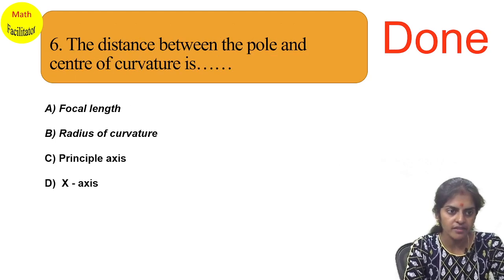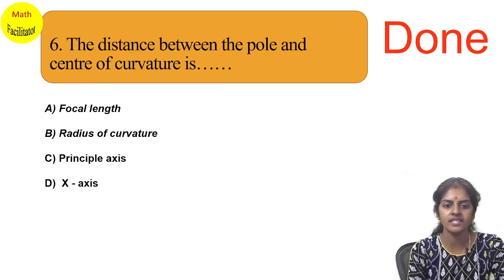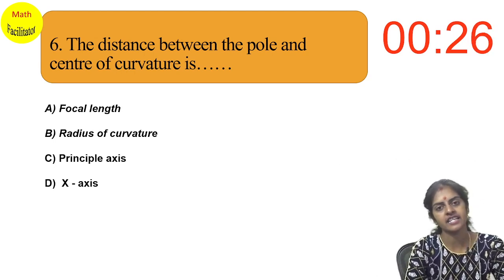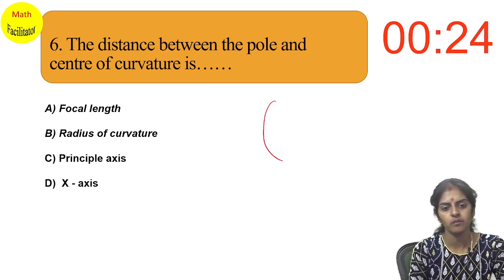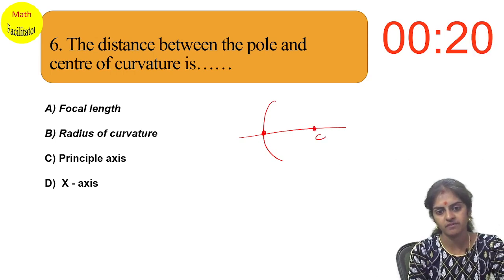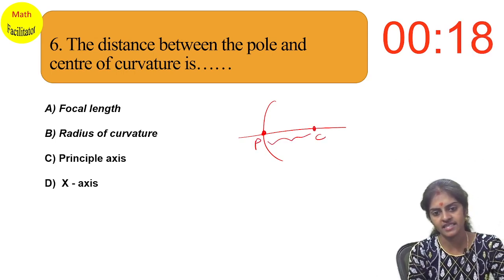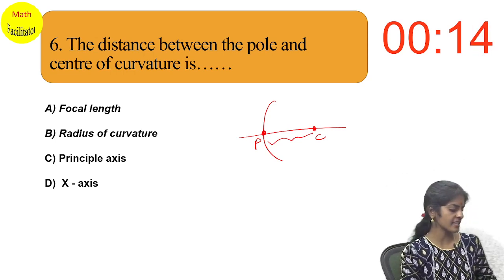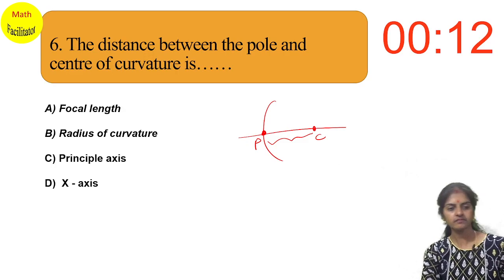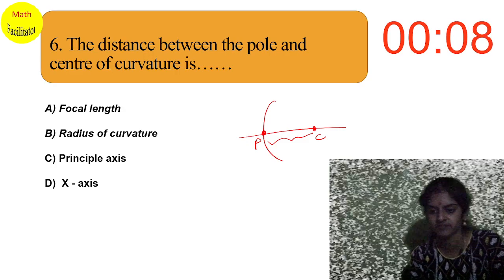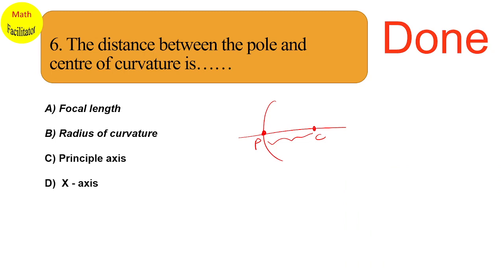What is the distance between the pole and the centre of curvature called? The distance between the pole and the centre of curvature is called the radius of curvature.